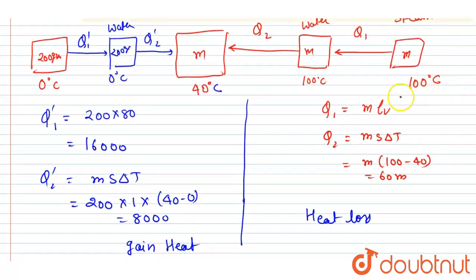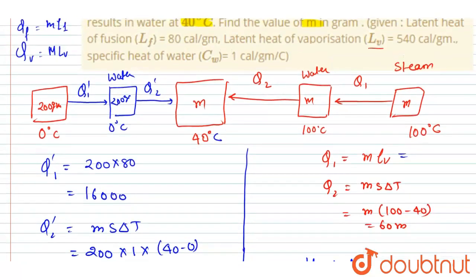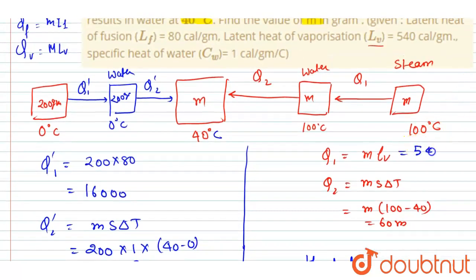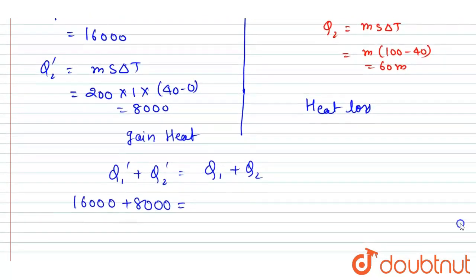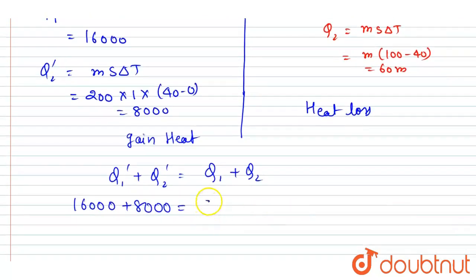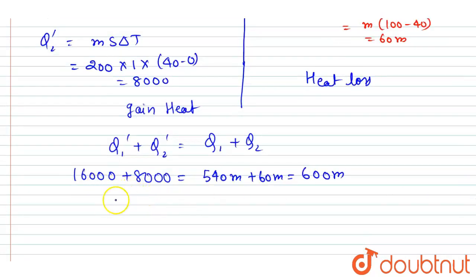So if you see here, latent heat of vaporization, if you put the value, is 540m. So 540m plus 60m, so it will be 600m. So if you add this you will get 24,000 equals 600m.